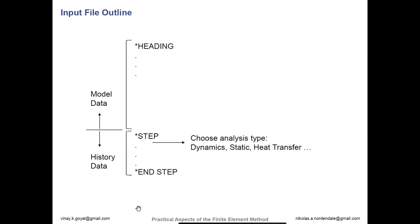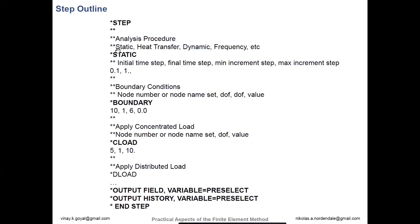Below the step definition you have the analysis procedure — in this case a static analysis, which will be star static. Then you have your time steps used in the analysis, and boundary conditions, where you specify what degrees of freedom are set to zero. For example, '1, 6' means you're fixing degrees of freedom 1 through 6. If you wanted to just fix one degree of freedom, you'd put '1, 1' or leave the second field blank. You can also apply a concentrated load: the node number goes first, then the degree of freedom, then the load value. You can also apply pressure loads, and then you select the kinds of outputs you want.